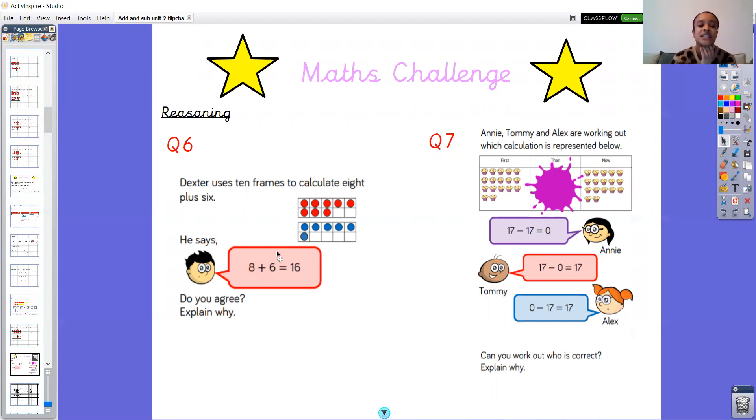So question six is Dexter uses ten frames to calculate 8 plus 6. He says 8 add 6 equals 16. Do you agree and explain why? So this is the important part, explain why. So you need to have a think about what he said, and if you agree with him you need to tell me why you agree with him. If you don't agree with him you need to tell me why you don't agree with him.